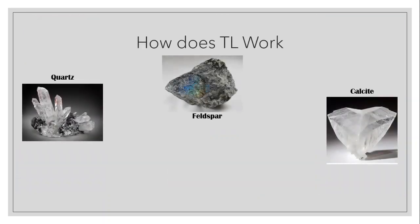Let's talk about how thermoluminescence dating actually works. On the screen I have quartz, feldspar, and calcite. These are all minerals that illuminate when exposed to heat or radioactive material. That means that the way Robert Boyle's diamond heated up and illuminated when he held it close to him is the same way these all work too. And this is what we find in pottery and in sediments — that's how thermoluminescent dating is possible.